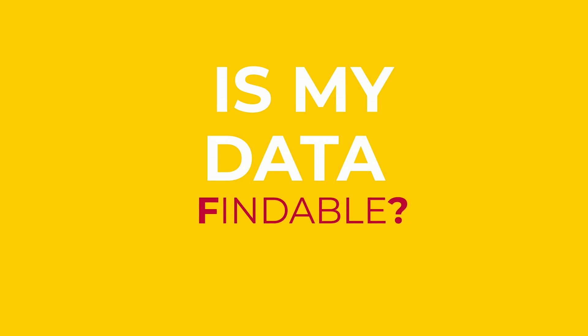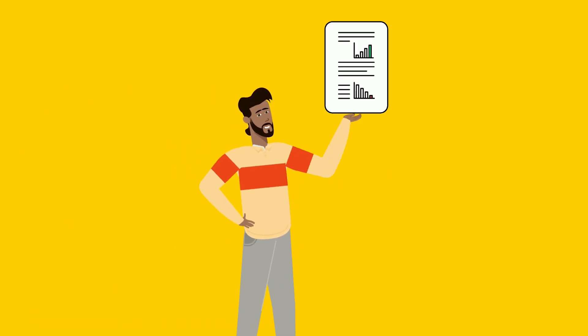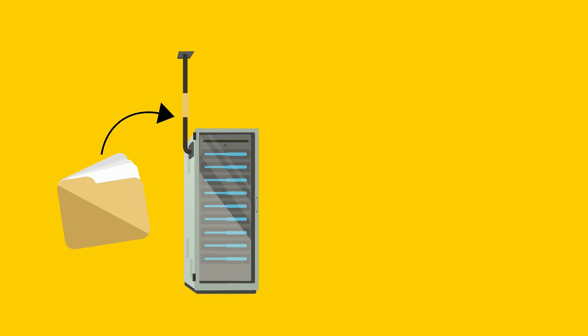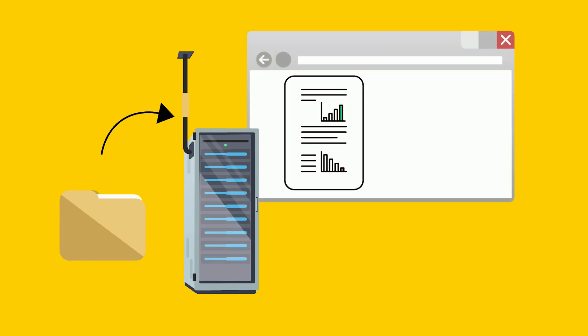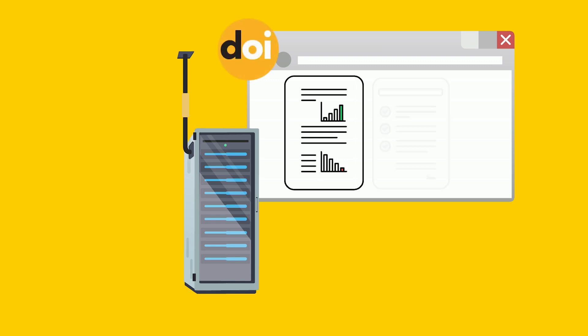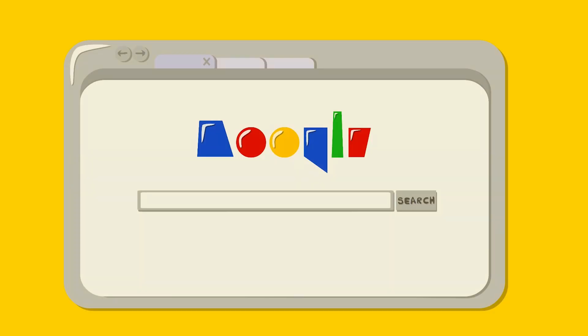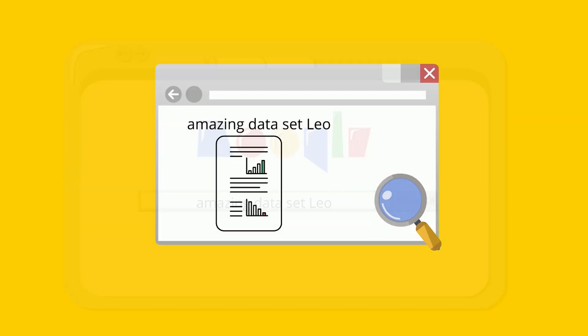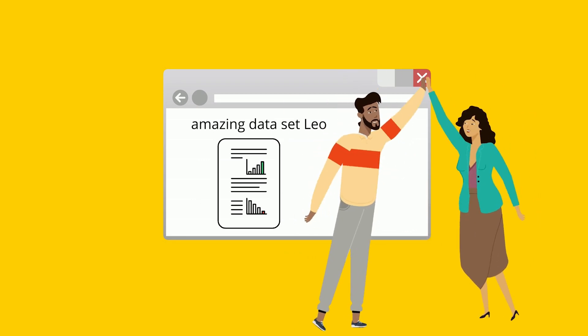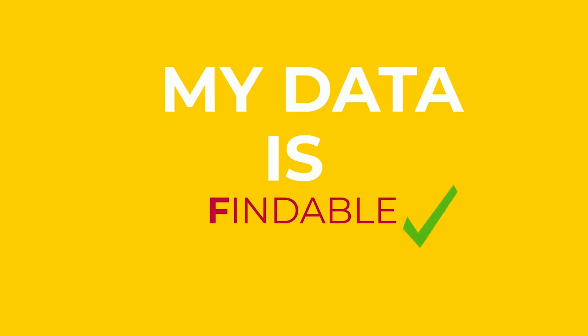Is my data findable? After publishing his paper, Leo published his dataset in a well-known data repository. The dataset has a persistent identifier, such as a DOI. He adds metadata to the dataset using a common metadata schema, including keywords that help find his dataset. Thanks to Leo's work, people can easily find his dataset. My data is findable.